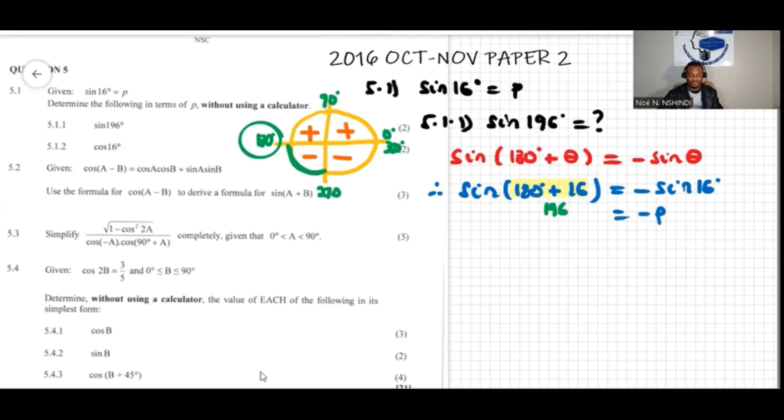So the answer is negative p. Therefore, sine of 196 degrees is equal to negative p. That's its value.